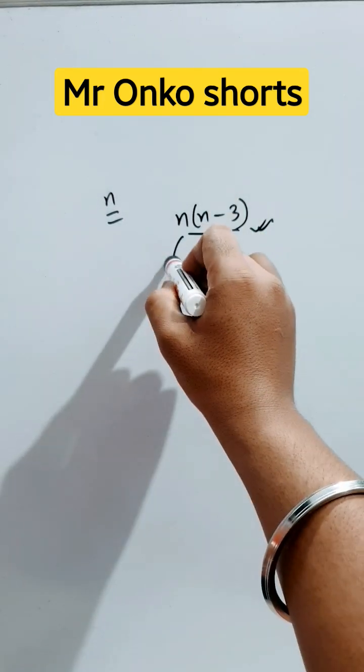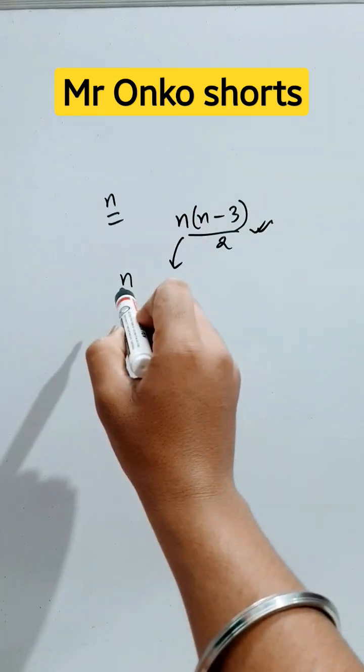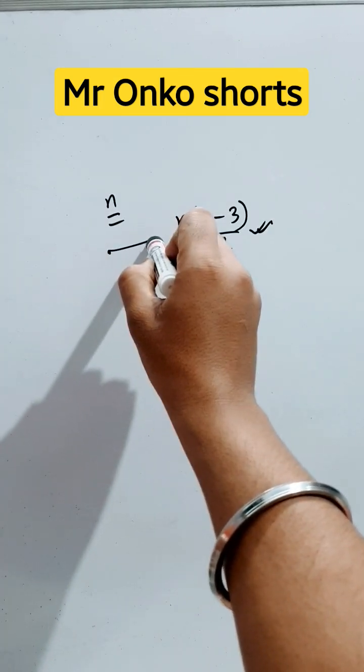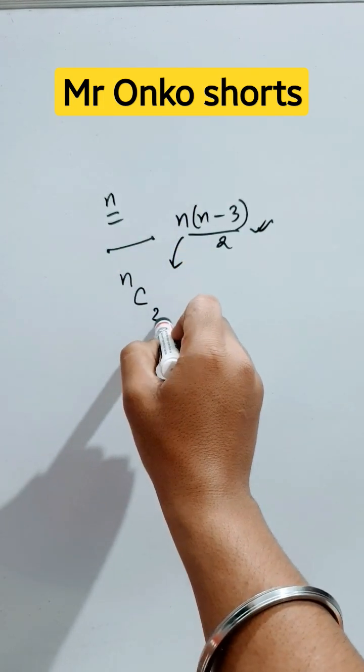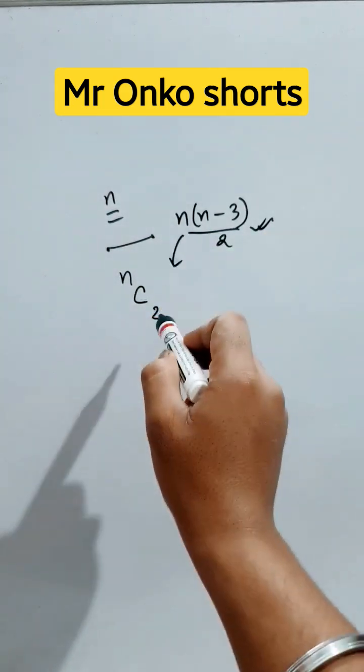Let's prove how it came. So n points are given. To draw a diagonal we need at least two points. From these n points we have to choose any two points, so nC2 are the ways we can draw any line.